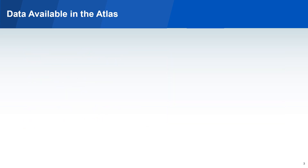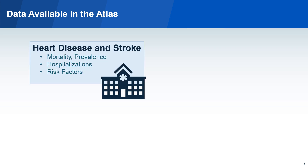There are many types of data available in the Atlas, and they fall into four main categories. They are heart disease and stroke data, reflecting mortality, prevalence, hospitalizations, and risk factors.